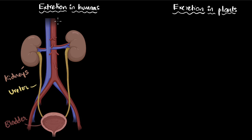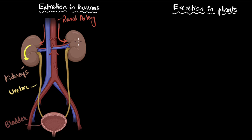If we look in a little bit more detail, the blood from the heart comes from the renal artery. The word 'renal' actually means kidneys. The blood from the renal artery enters into the kidney where it gets filtered out. All the unwanted stuff comes out and forms the urine. The cells also use up the oxygen from that blood, and then the deoxygenated, filtered blood enters into the veins — the renal vein — and goes back to the heart.